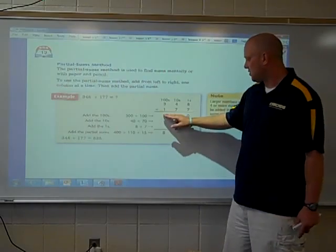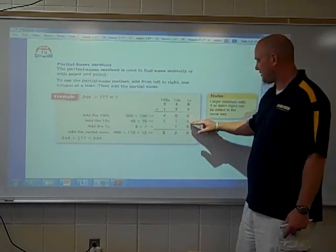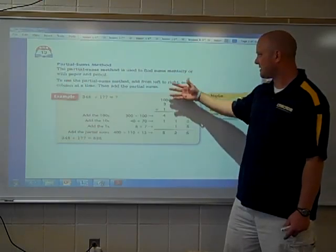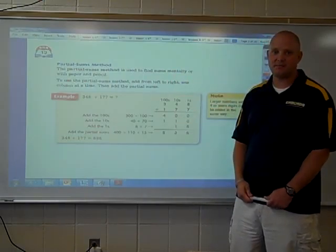In the end of it, you add all three of those different place values up to get your total value. And that's how you would go about using the partial sums method.